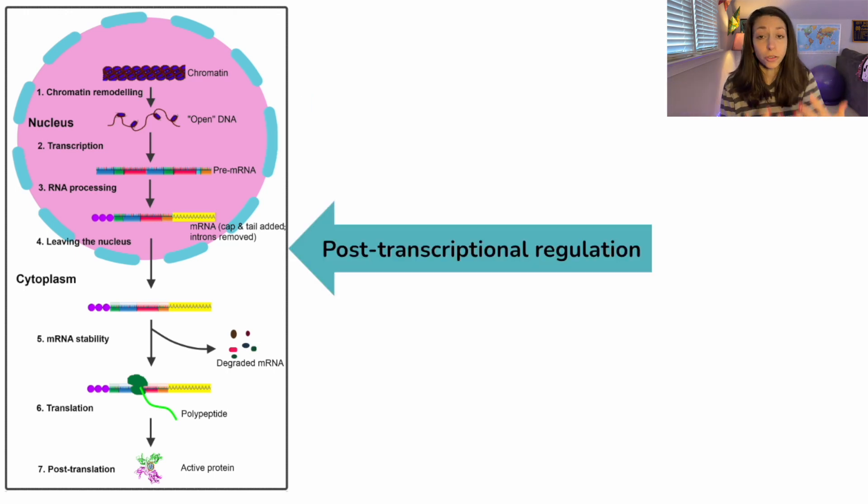And then after transcription, so post-transcriptional regulation can involve lots of different things. One of the most important that we'll talk about in a little bit more detail is alternative splicing or removal of introns. So these are different sections of DNA that are non-coding that are going to be taken out of the mRNA before it goes on to translation. We can also have alternative splicing, which we'll talk about in just a moment. Additionally, that mRNA can have parts modified or added, like the addition of a 5' cap and something called a poly-A tail that's going to help with the stability of the mRNA molecule as it leaves the nucleus.